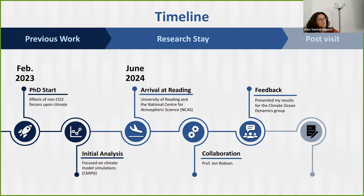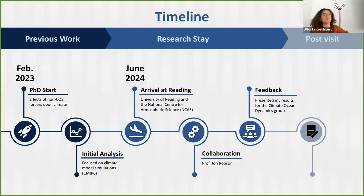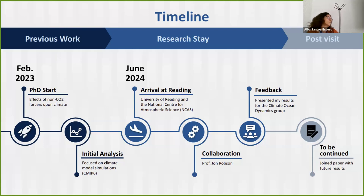There I was hosted by Professor John Robson, who specializes in Atlantic variability and the AMOC — the Atlantic Meridional Overturning Circulation. It was a really nice experience. I got to present my results with the Climate and Ocean Dynamics Group in a seminar much like this one and received really good feedback that helped me develop my research further. In the future, the plan is to continue the collaboration with John, keep working on the analysis, and hopefully present a paper.